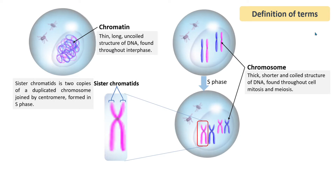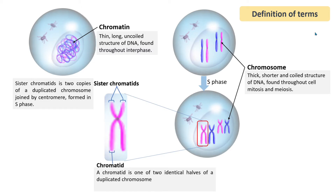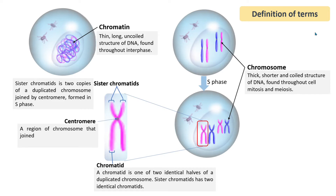A chromatid is one of two identical halves of a duplicated chromosome. Sister chromatids consist of two identical chromatids. The last term is centromere. The centromere is a region of a chromosome that joins sister chromatids and has an attachment site for spindle fibers.